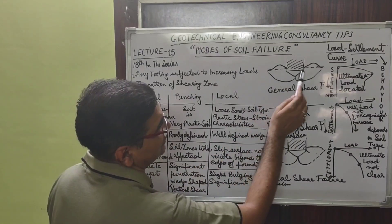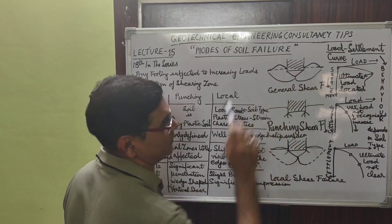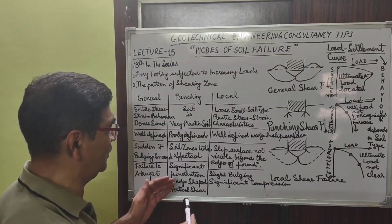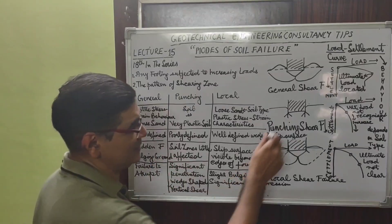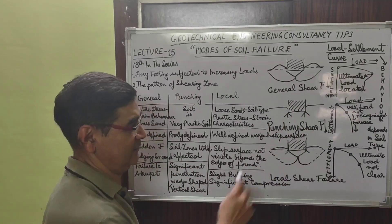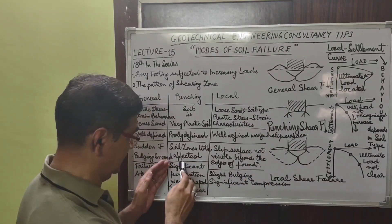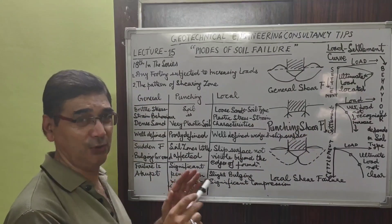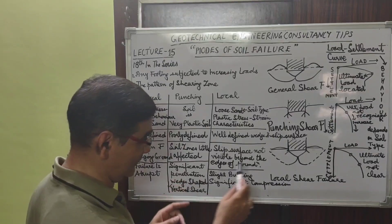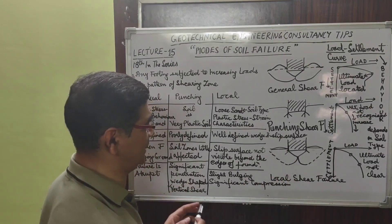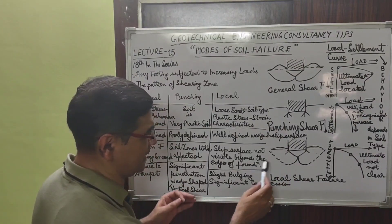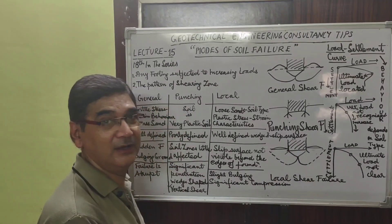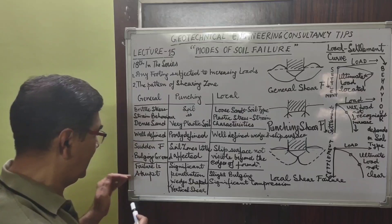In general shear failure, there is sudden failure and bulging of the ground adjacent to the foundations. In punching shear failure, the foundation suddenly sinks in and the soil zones nearby adjacent to the footing are little affected or not affected at all. In local shear conditions, slip surfaces are not visible beyond the edges of the foundations.